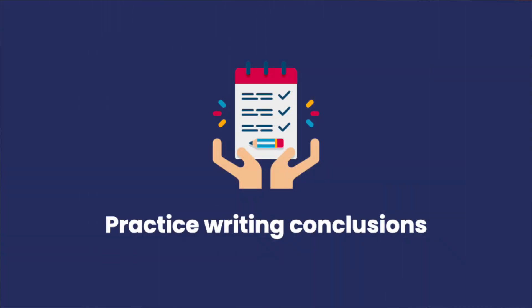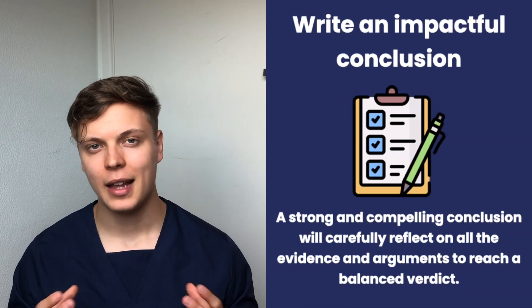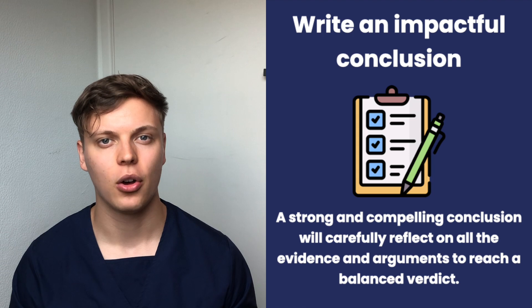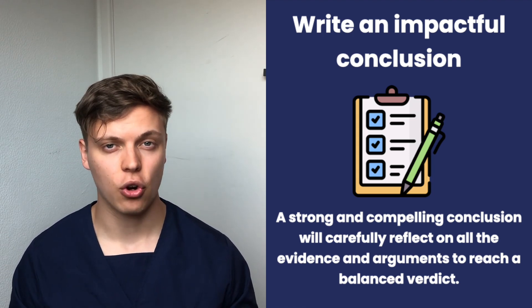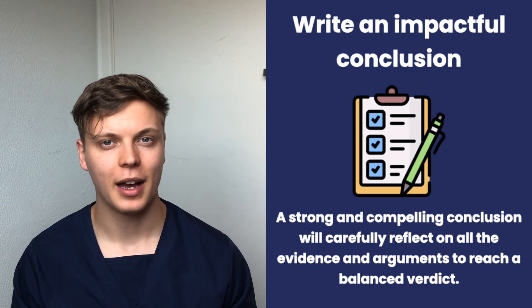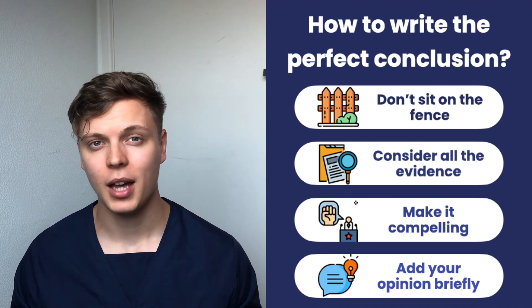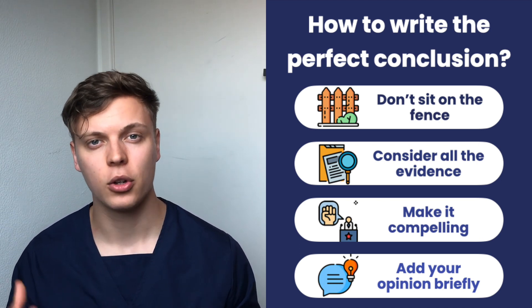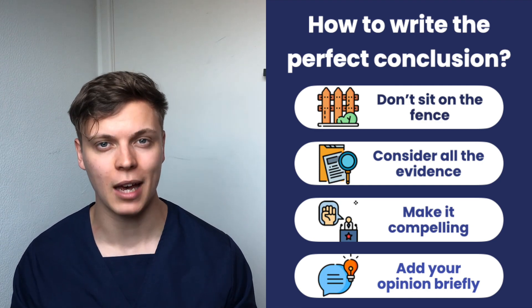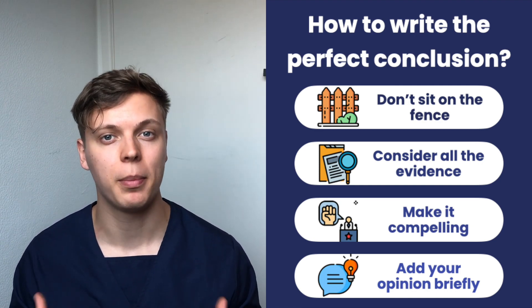Tip number eight is to practice writing conclusions that are strong and compelling but also balanced. This is crucial because the last two sentences are what will leave a lasting impression on your examiner. If you make these final sentences strong and compelling it really rounds off your argument, but if you make them too opinionated it gives the wrong idea. You need to ensure you're not sitting on the fence too much, but at the same time make it clear that your conclusion is based off a careful consideration of all the evidence and points you've made.